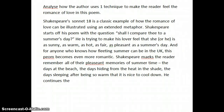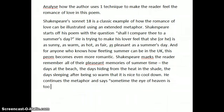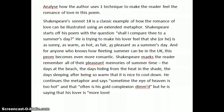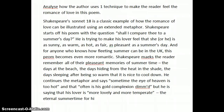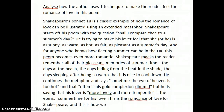He continues the metaphor and says that sometimes the eye of heaven is too hot and that often is his gold complexion dimmed. But he is saying that his lover is more lovely and more temperate — the eternal summertime for his love. This is the romance of love for Shakespeare, and this is how we understand love in this poem.